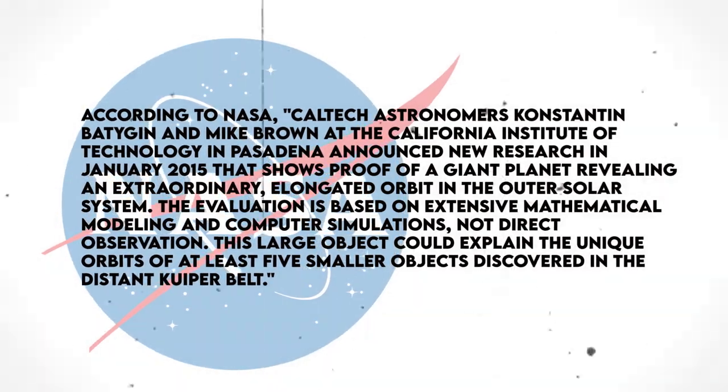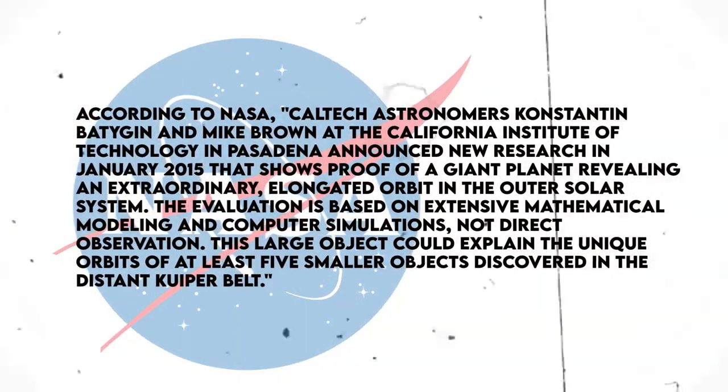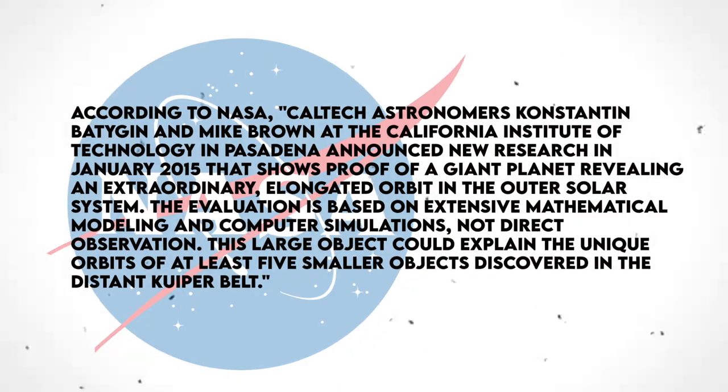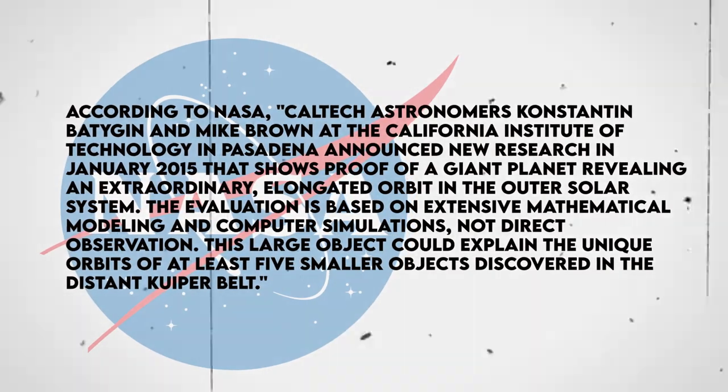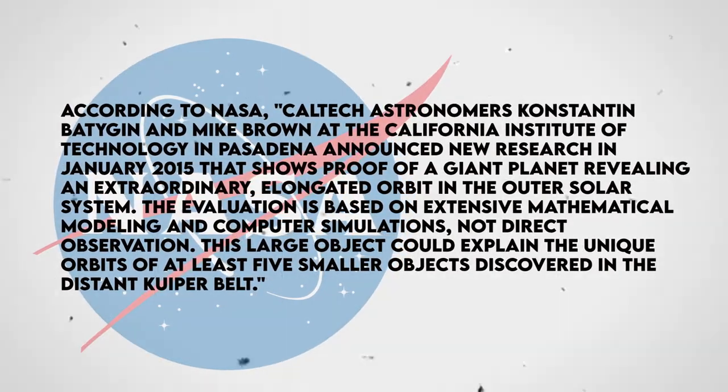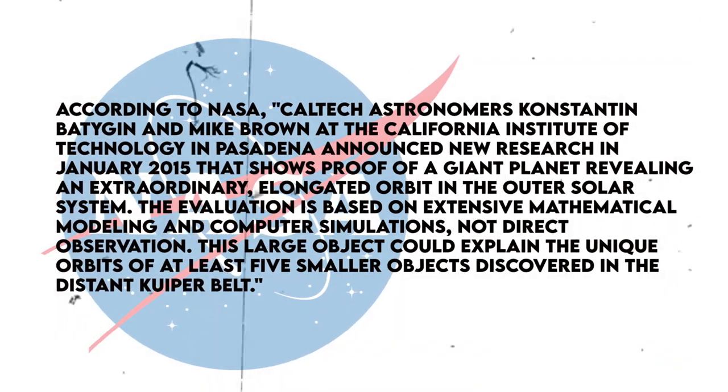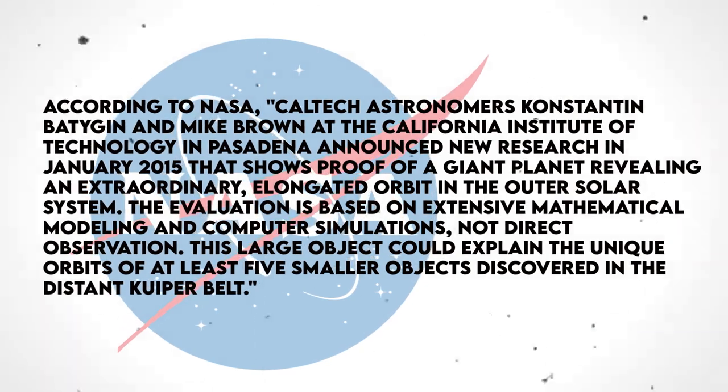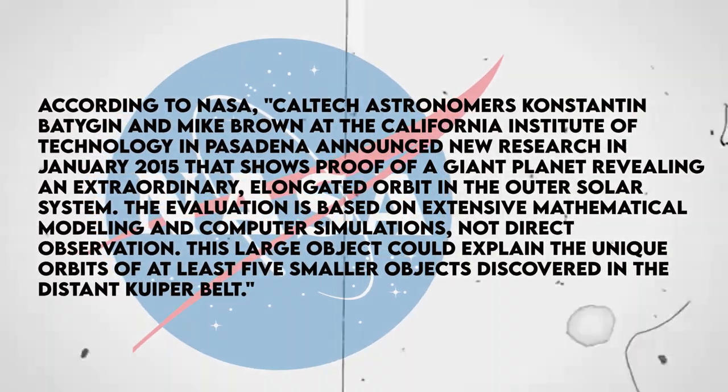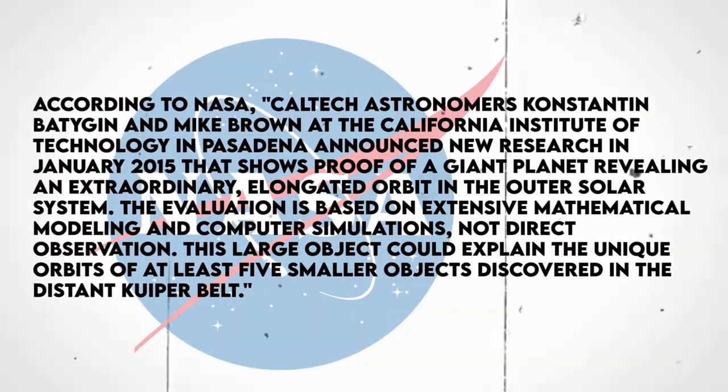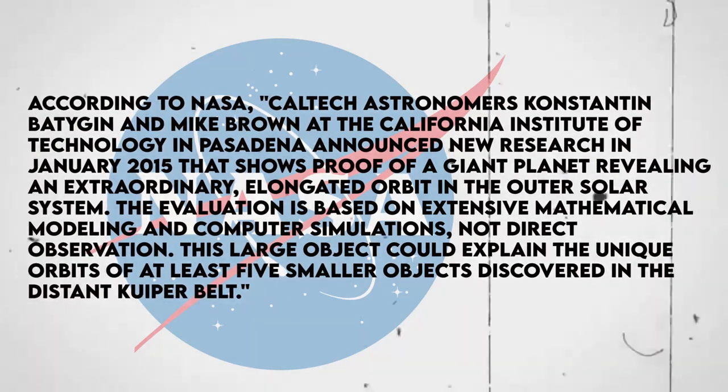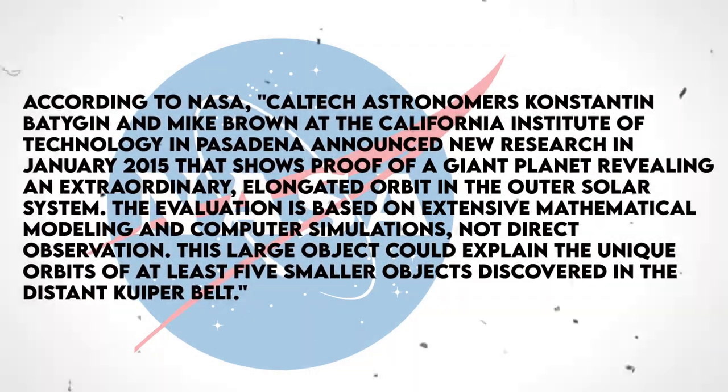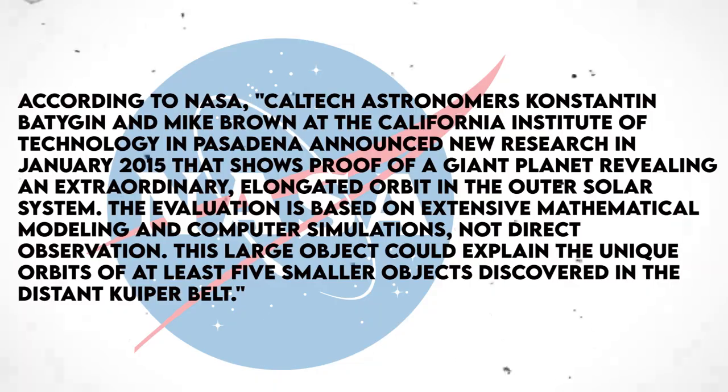According to NASA, Caltech astronomers Konstantin Batigen and Mike Brown at the California Institute of Technology in Pasadena announced new research in January 2015 that shows proof of a giant planet revealing an extraordinary elongated orbit in the outer solar system. The evaluation is based on extensive mathematical modeling and computer simulations, not direct observation.